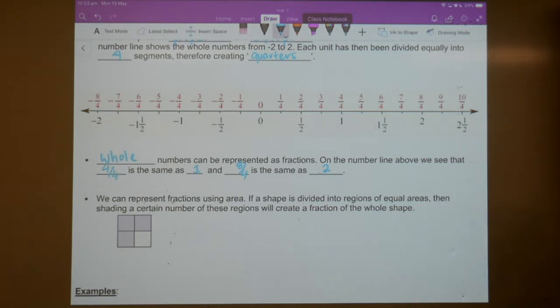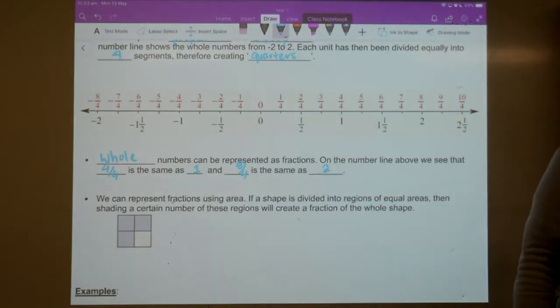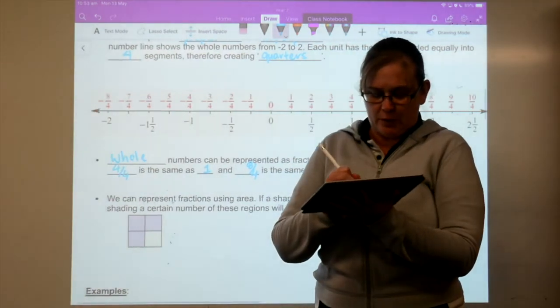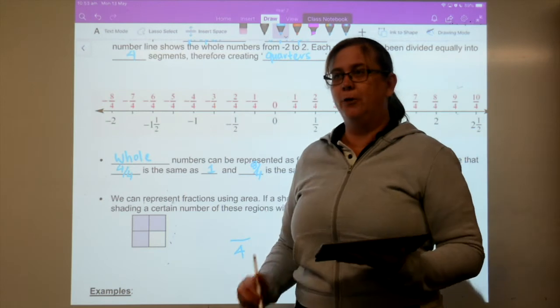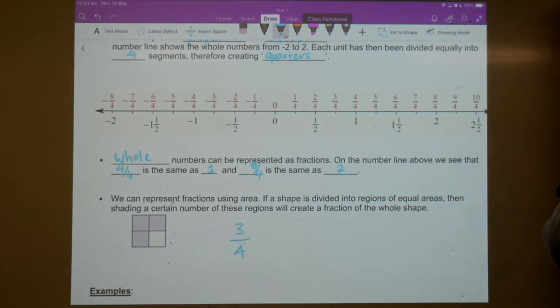Now, something else that we can do. We can actually represent fractions in a different way too. We can do it visually. So we have a shape here. It's divided in regions, equal area. Some of them are shaded. What's our fraction? How many sections? How many bits do we actually have? Three. We have four bits in total. So our denominator is four. How many bits are shaded? Three. Three out of four. Okay. So four parts total, three parts shaded.